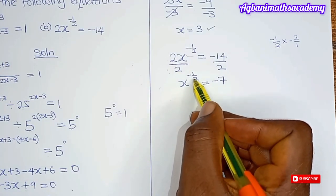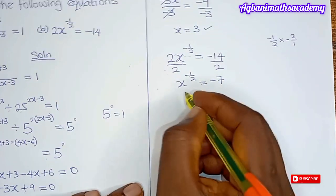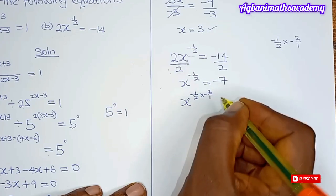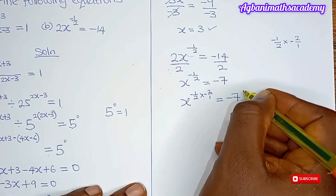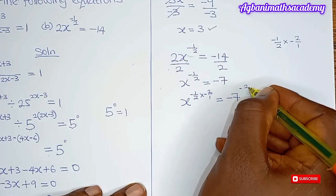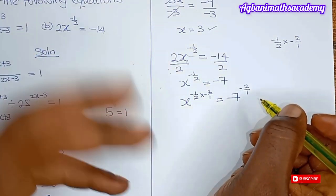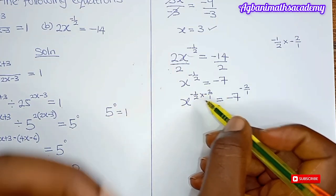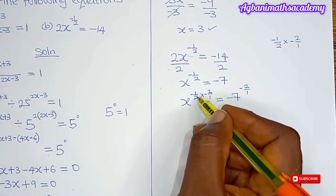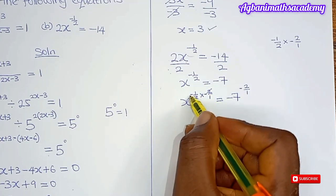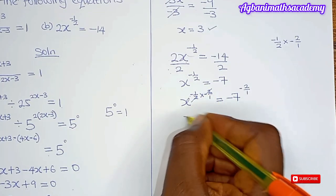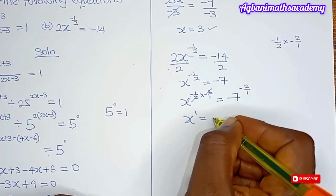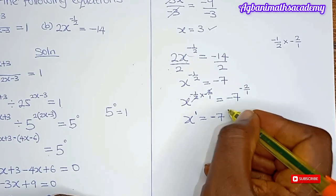Now we multiply both sides by the inverse of the exponent. So we have x to the power of minus 1 all over 2, multiplied by minus 2 all over 1, equals minus 7 to the power of minus 2 over 1. The 2s cancel, and minus multiplied by minus gives plus, so we get x to the power of 1, which simplifies to x, equals minus 7 to the power of minus 2.